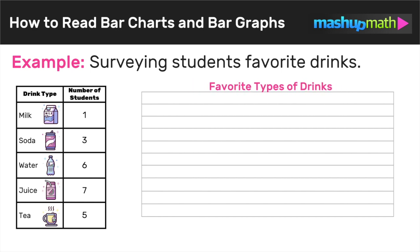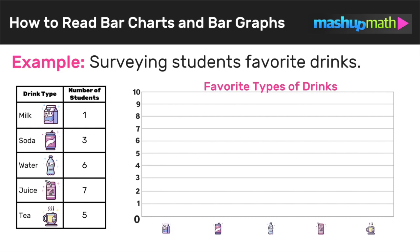Let's start out by giving our bar graph a title — in this case, 'Favorite Types of Drinks.' Next, we have to label our vertical axis using an appropriate scale. Since all the numbers in the data chart are single-digit numbers, let's label our vertical axis from zero to ten. Next, we need to make space for each type of drink on the horizontal axis, and now we're ready to start constructing those bars based on the data in the table.